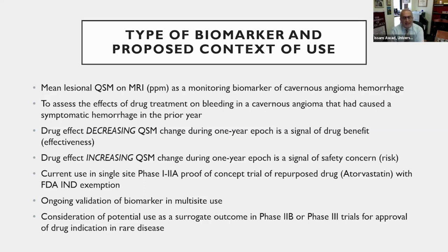In a two-tailed analysis, an increase in QSM would signal increased bleeding in the lesion and potentially a concern for safety or risk. This biomarker is currently being deployed as a primary outcome in a proof of concept trial, and there is ongoing validation for multi-site use. The hypothesis is the potential use as a surrogate outcome in phase 2b trials and ultimately in phase 3 trials for approval of drug indication in rare disease.